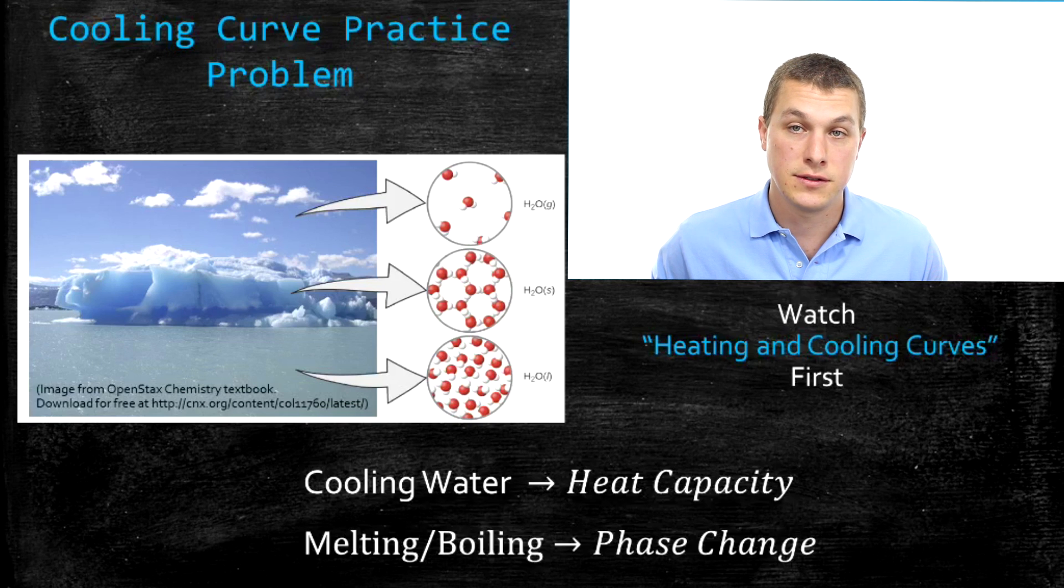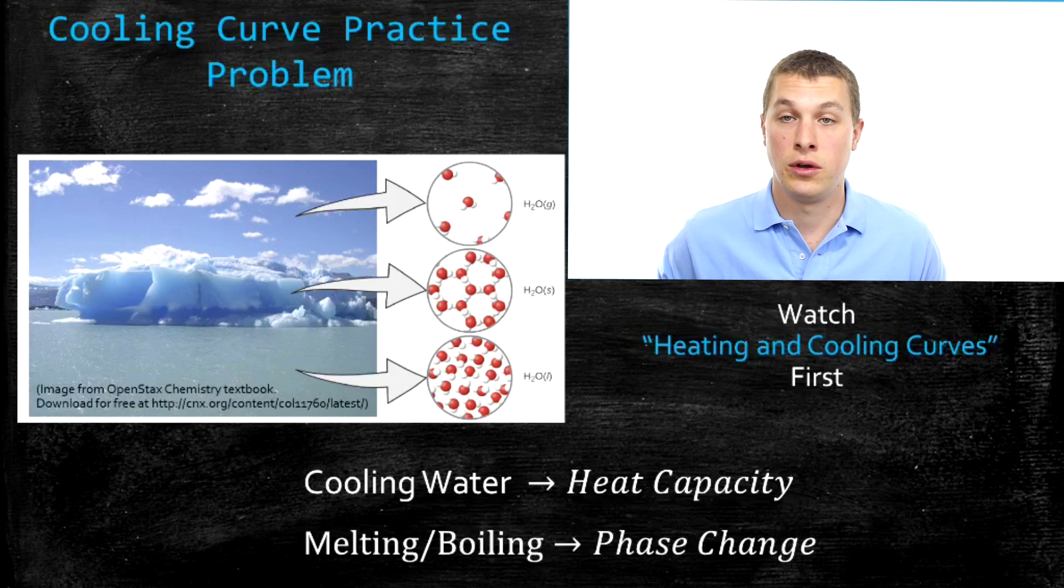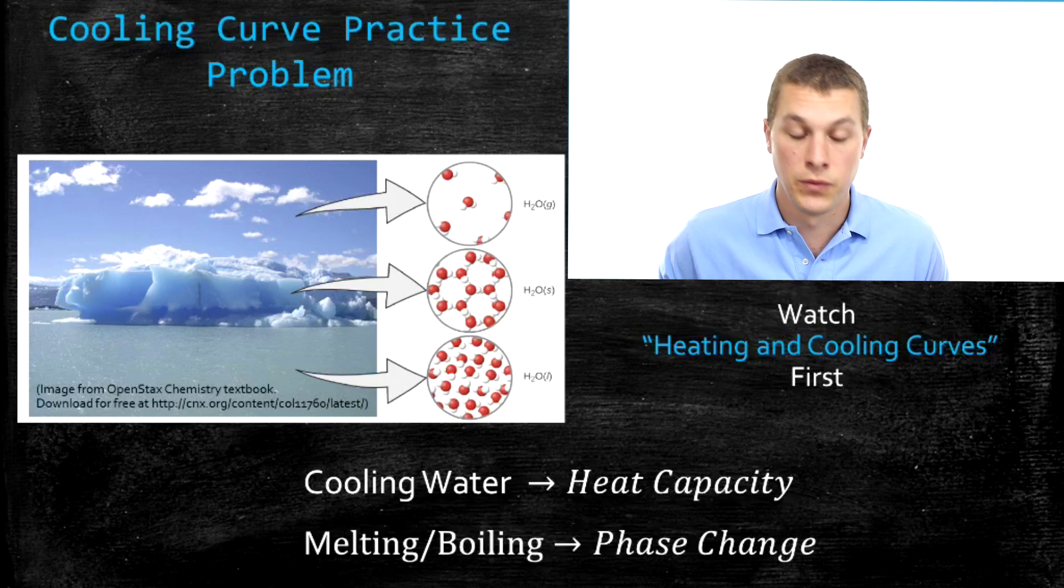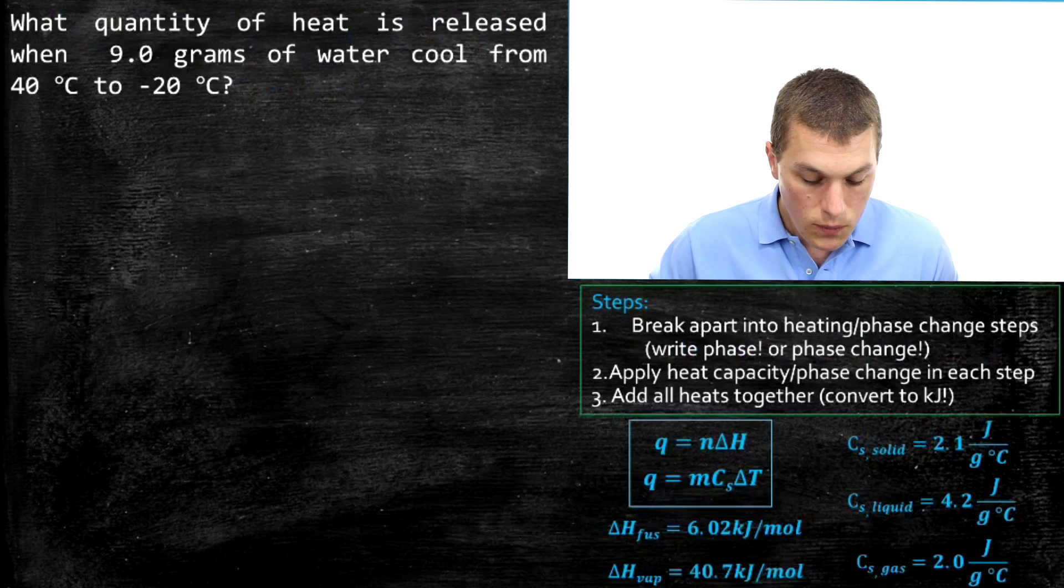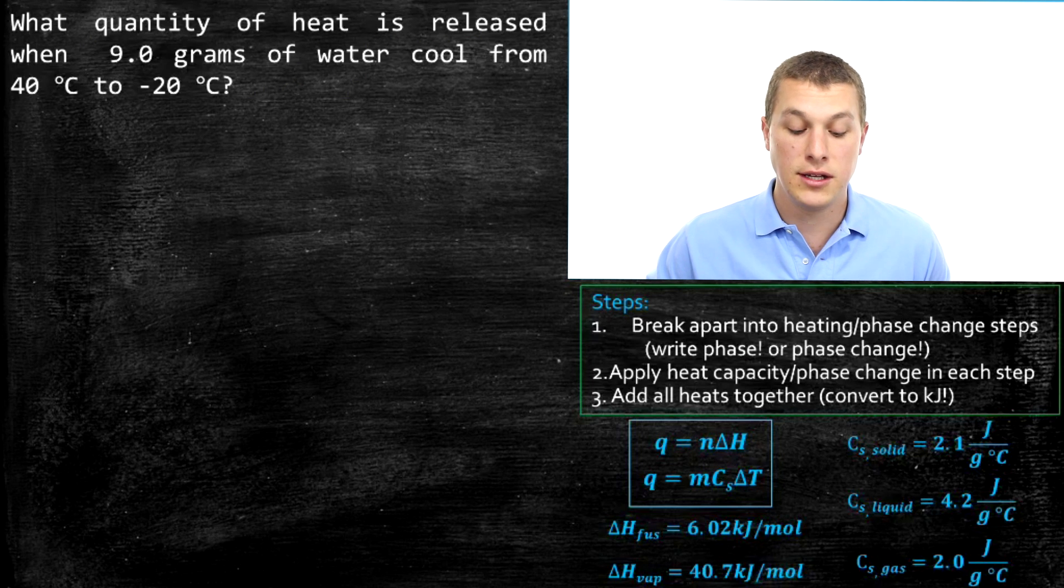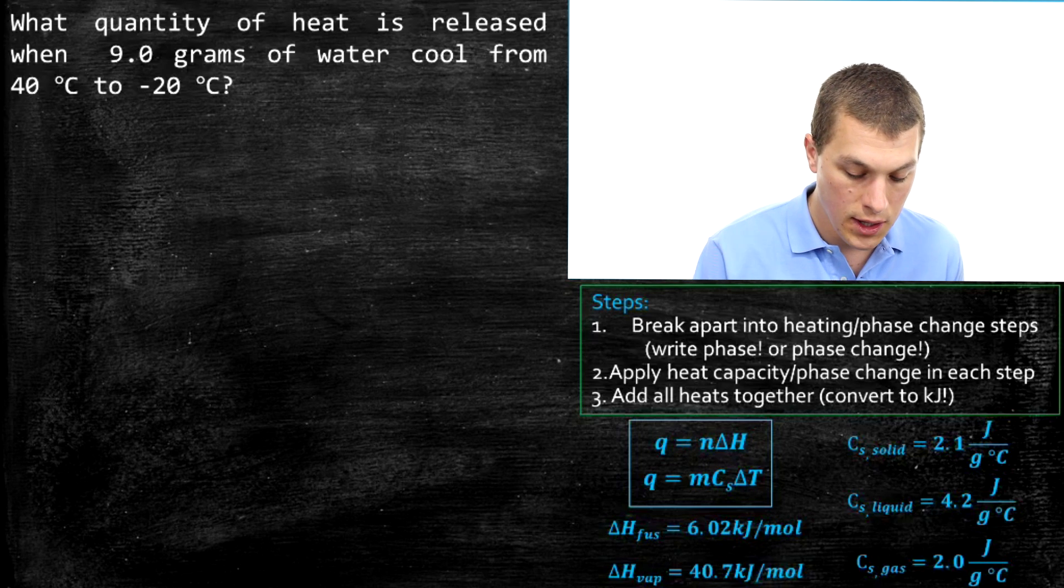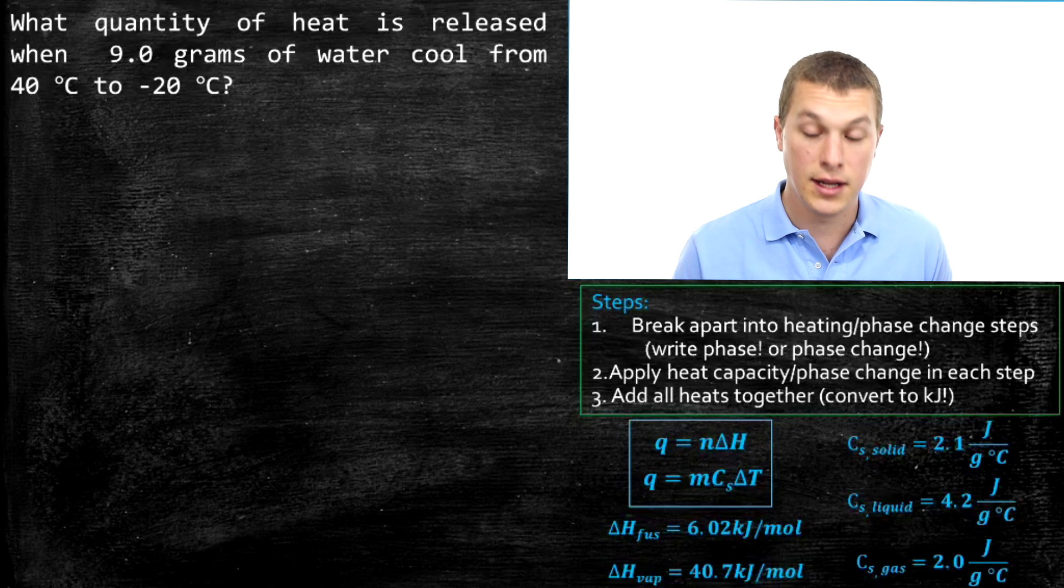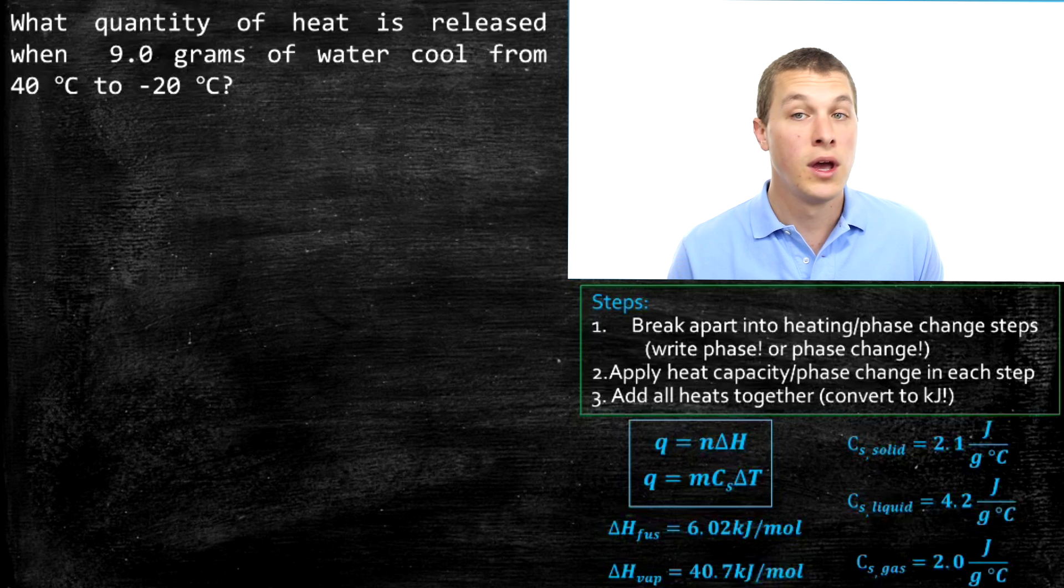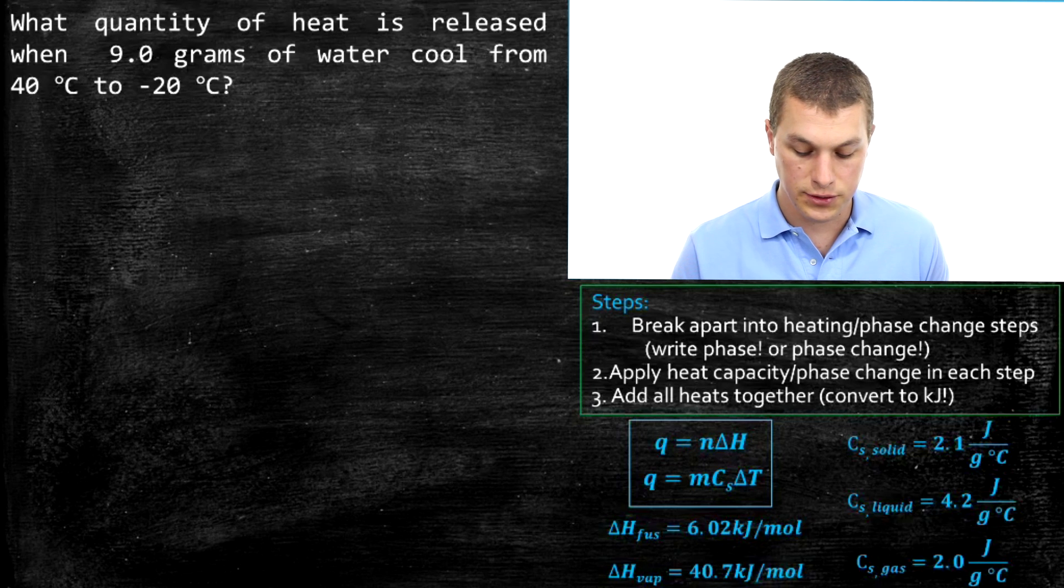We're going to be using phase change calculations as well as heat capacity calculations. It might be useful for you to check out my video on heat capacity and also my video on enthalpy, heat, and phase changes. So what are we going to be doing in this problem? We're going to look at the quantity of heat released when nine grams of water cools from 40 degrees Celsius to minus 20 degrees Celsius. This is pretty similar to a problem that I did in the heating curve video, except now we're actually cooling the sample down instead of heating it up. You'll see that that has a critical difference.